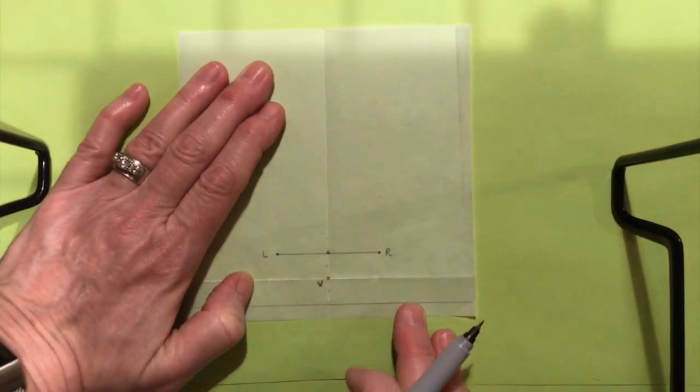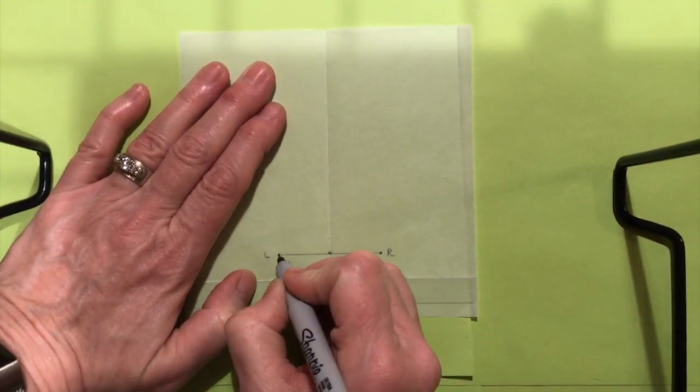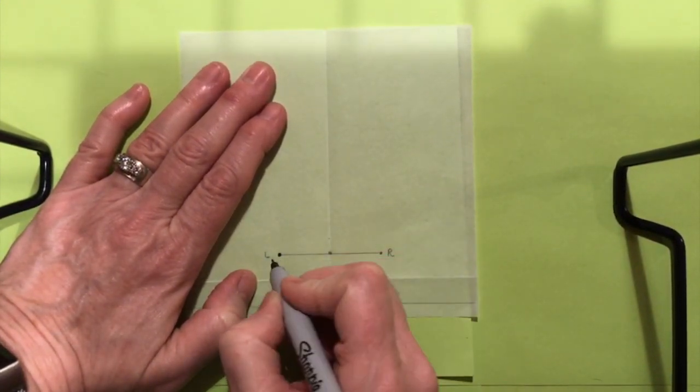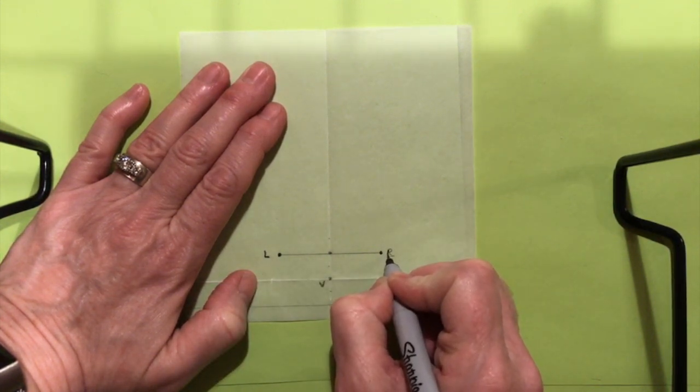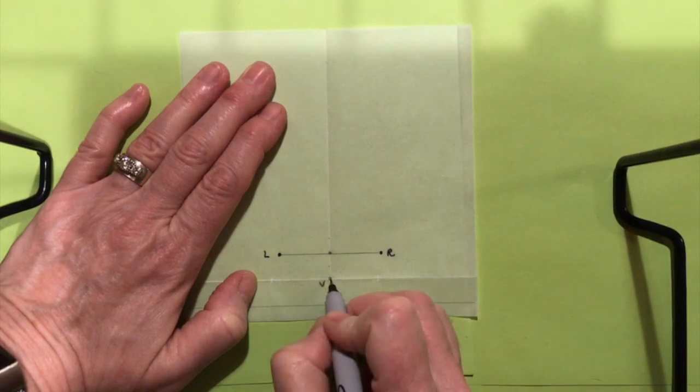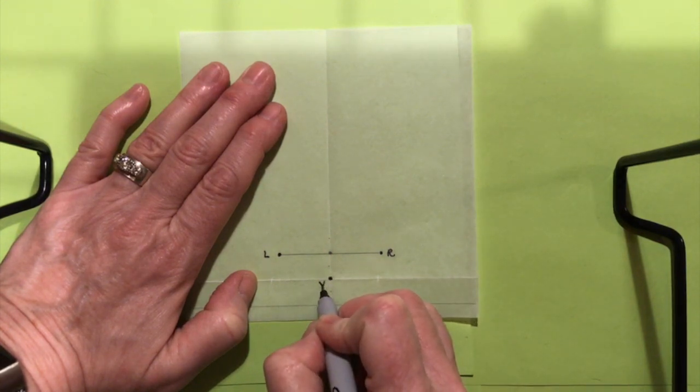I'm not going to highlight everything. I'm not going to darken everything. I'm only going to darken the point L and its label, the point R and its label, and the point V and its label.